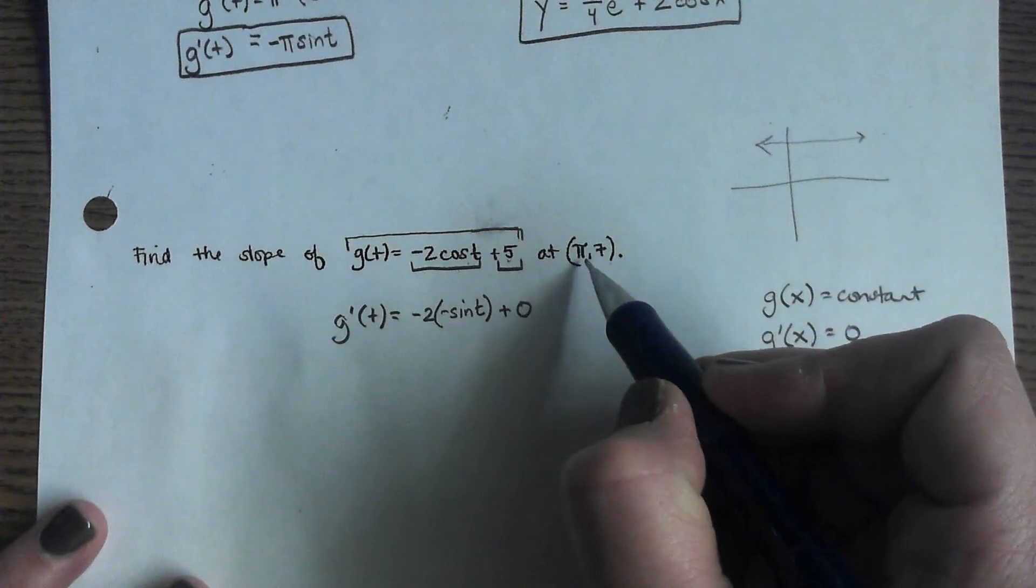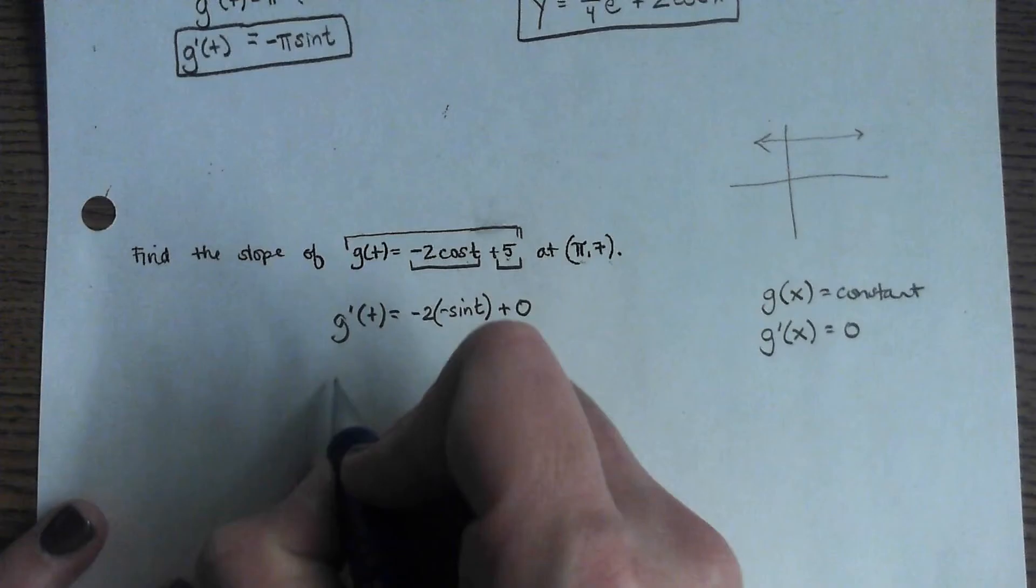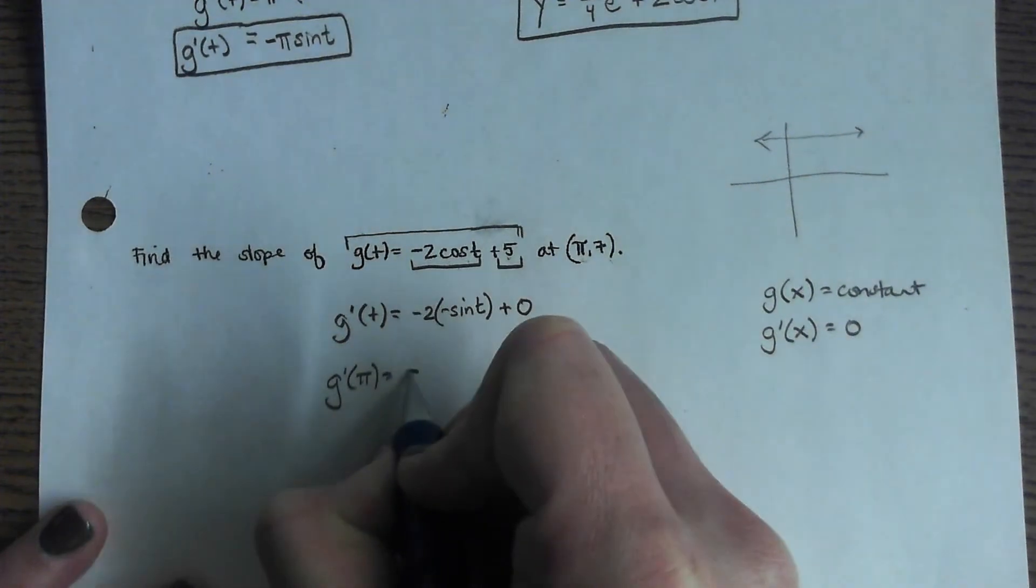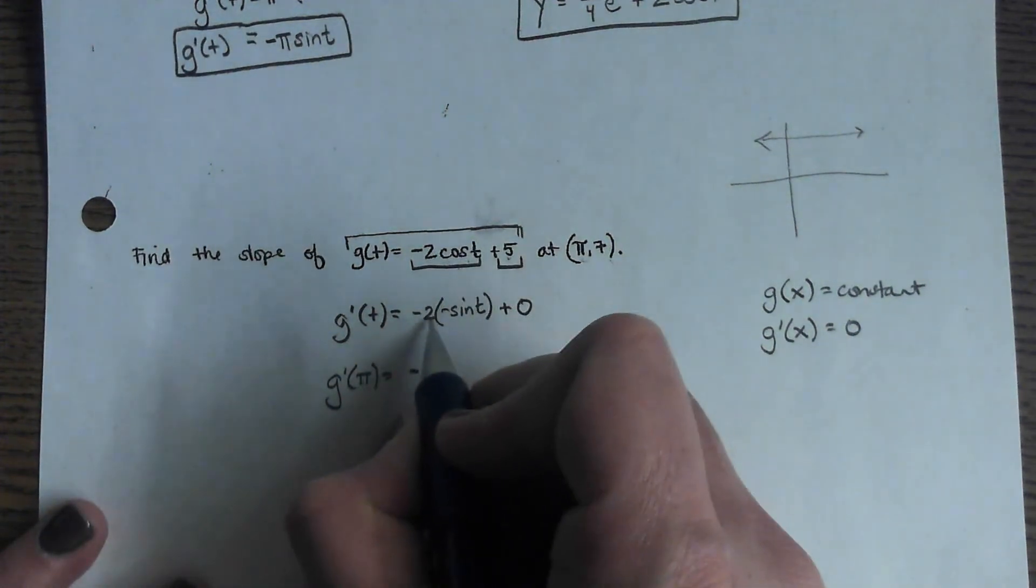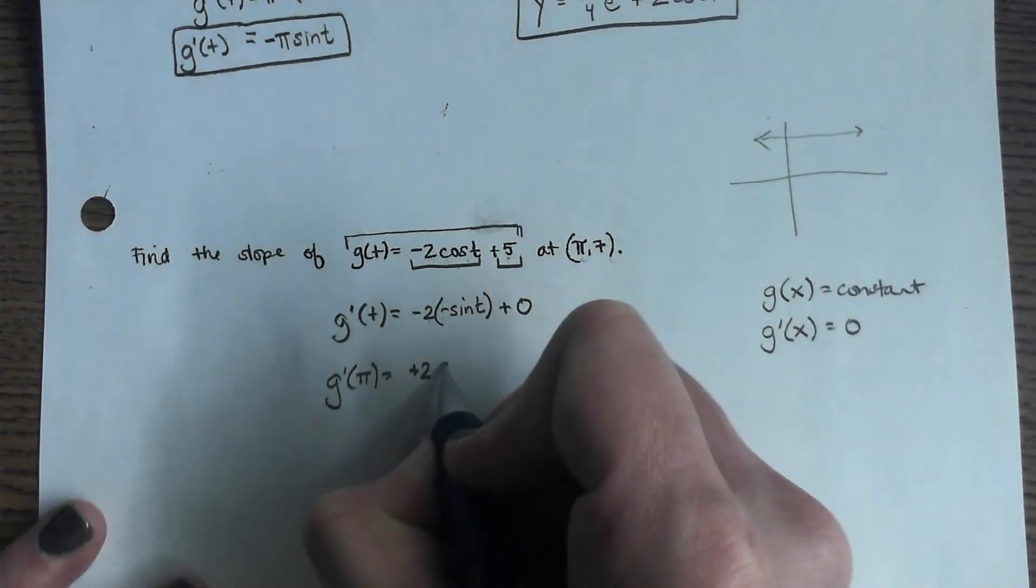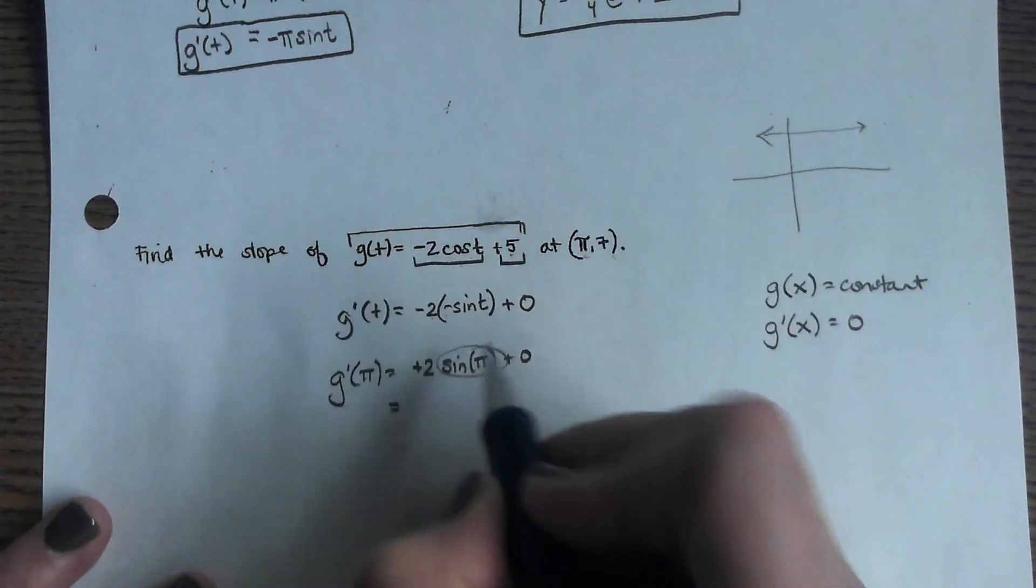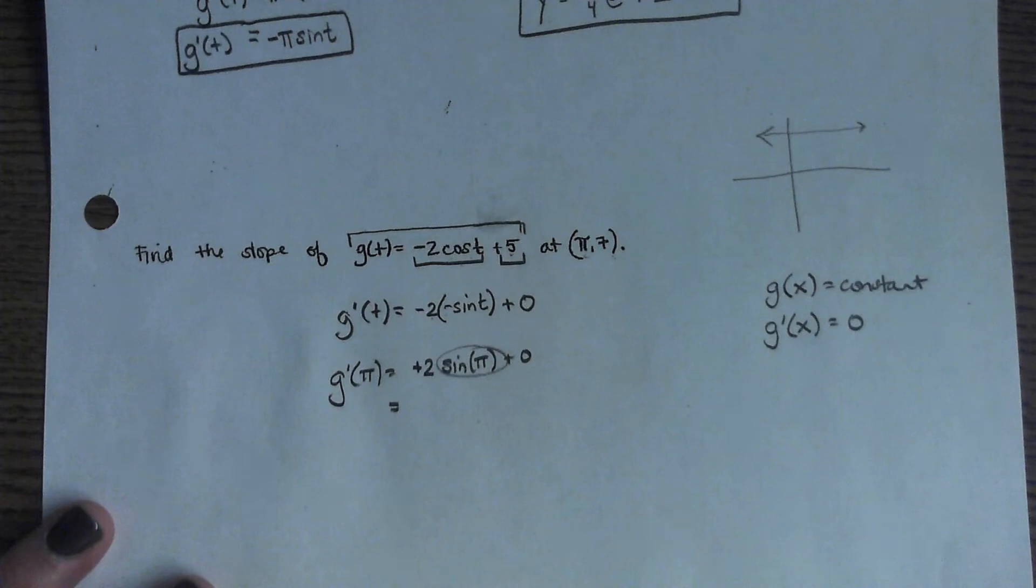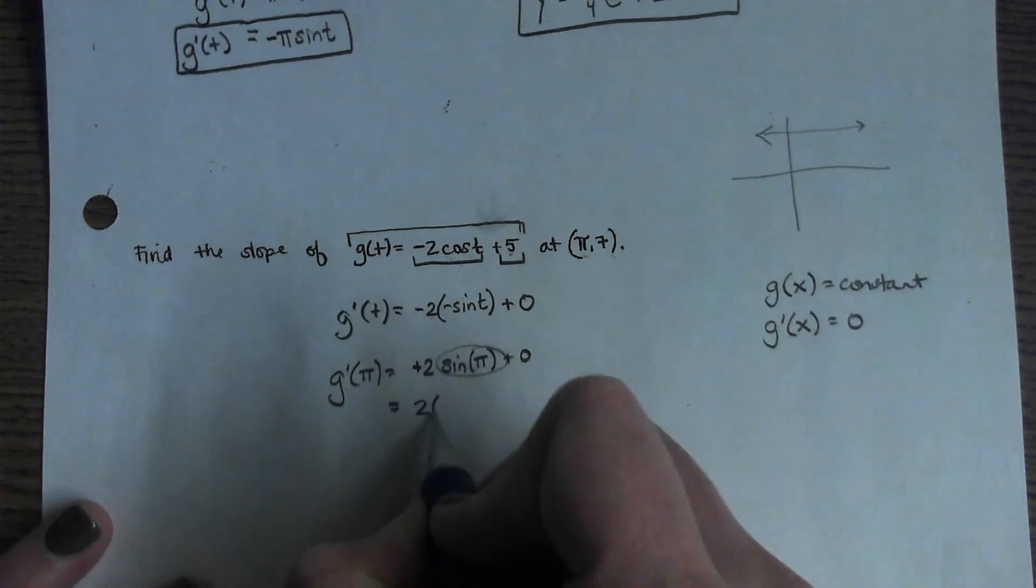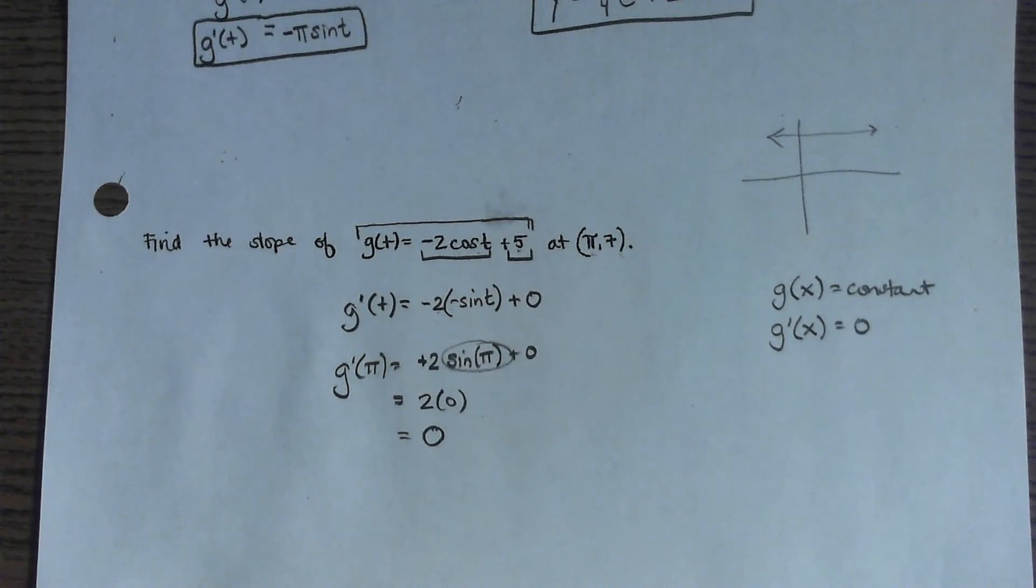And then we want to evaluate this at a t value of pi. So we're just going to do g prime of pi. And that's a positive, right? Negative 2 times negative sine is a positive 2 sine of pi plus zero. And what's the sine of pi? Zero. 2 times zero is zero. So apparently the slope of this at pi is zero.